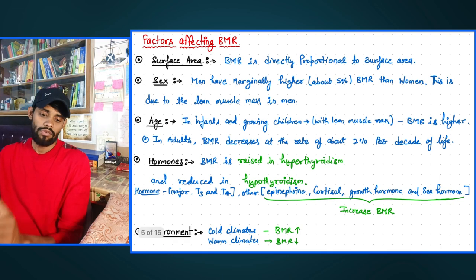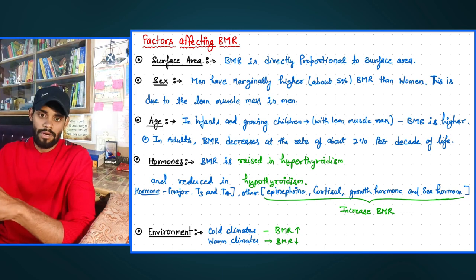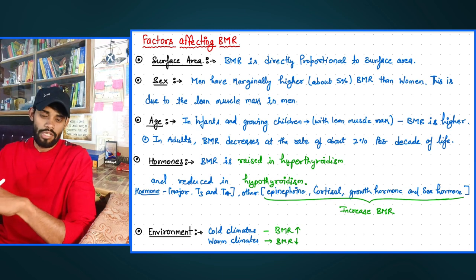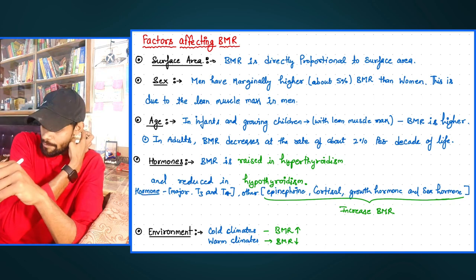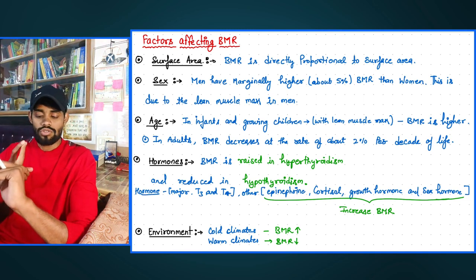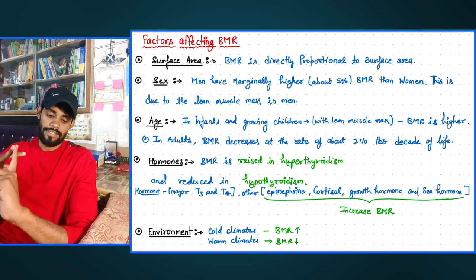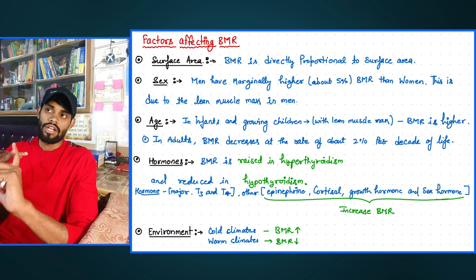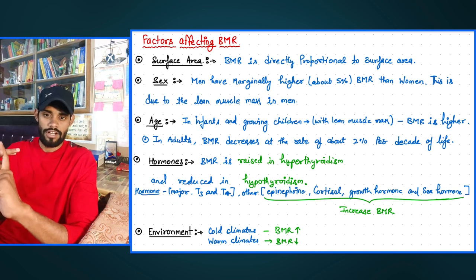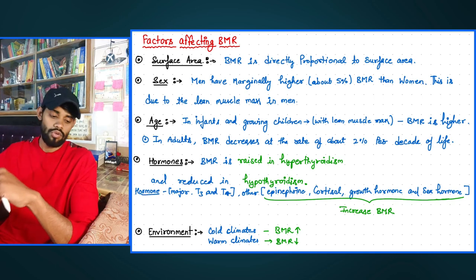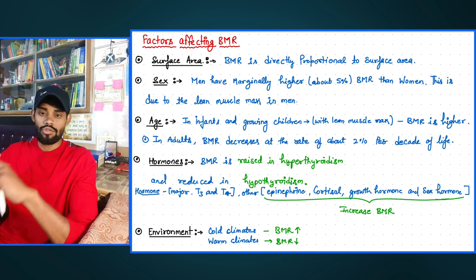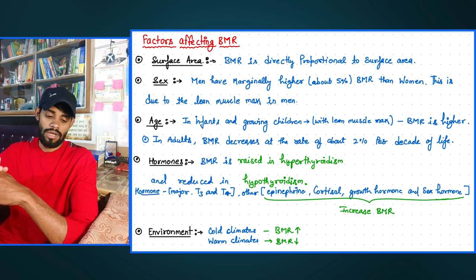Factors affecting BMR: First, surface area — directly proportional; greater body surface area means greater BMR, linked to height and weight. Second, sex — male BMR is higher than female. Third, age — infants and growing children have higher BMR; as age increases beyond 18, BMR tends to decrease. Fourth, hormones — the major hormone is thyroid; T3 and T4 control metabolic rate. Cortisol and growth hormone also increase BMR. If BMR increases, it indicates hyperthyroidism; if it decreases, hypothyroidism.